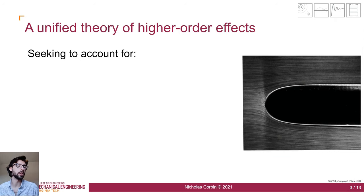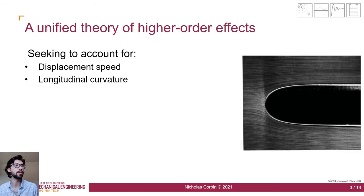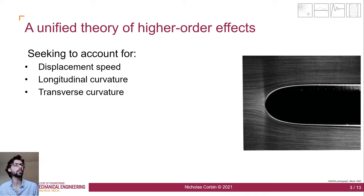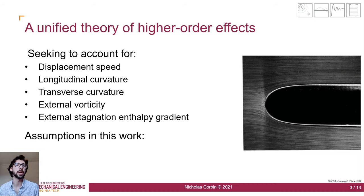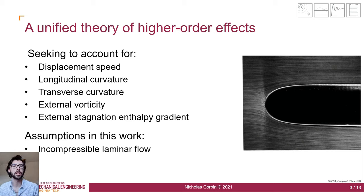We can also account with the same language for external vorticity and external stagnation enthalpy gradient. So not only can we account for fluid motion effects, but we can also account for thermal effects using the same language. Some assumptions we'll make in this work: we're only going to be considering incompressible laminar flow. A paper I'll be publishing later this year will cover the compressible extension. We're considering laminar flow in the boundary layer with no turbulence and no separation. I'll also be specializing to the cases of plane flow and axisymmetric flow, which are valid for the majority of cases we're interested in, such as airfoils or axisymmetric flow around a missile or a rocket.